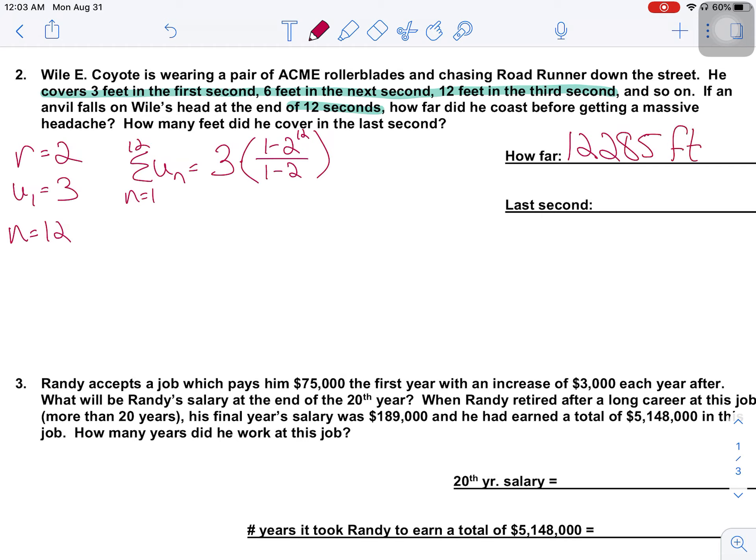Feet. So that's 12,285 feet, which if you know anything about how many feet there are in a mile, I think that's a little bit under two miles. And two miles in 12 seconds seems a little ridiculous, but it's a cartoon, so we're going to go with it.